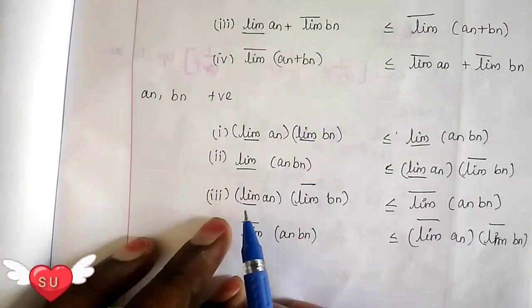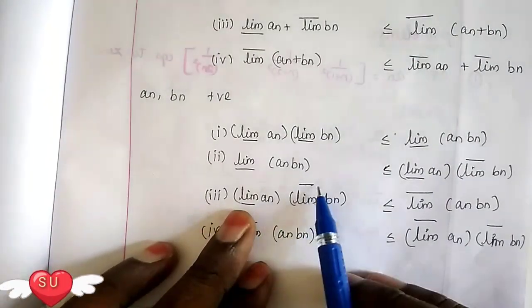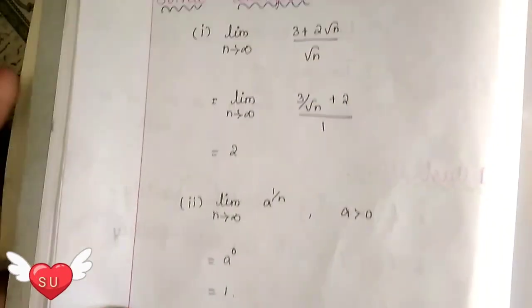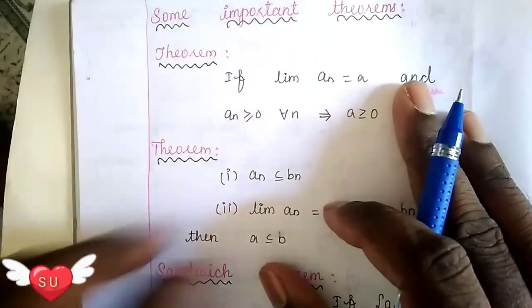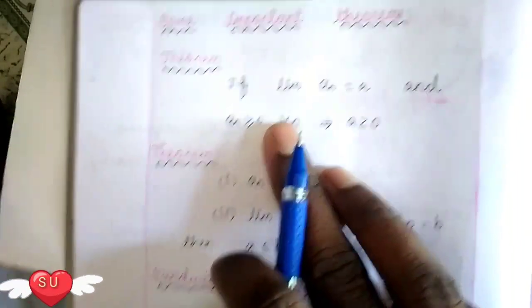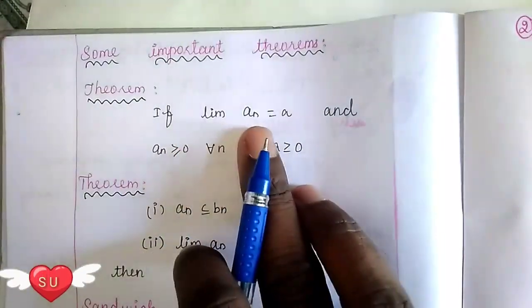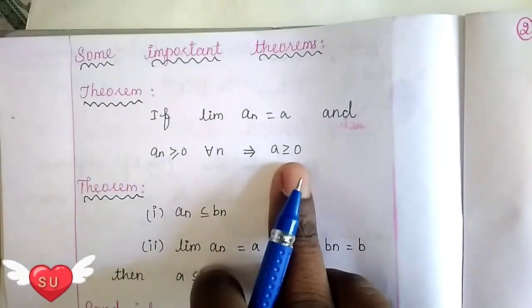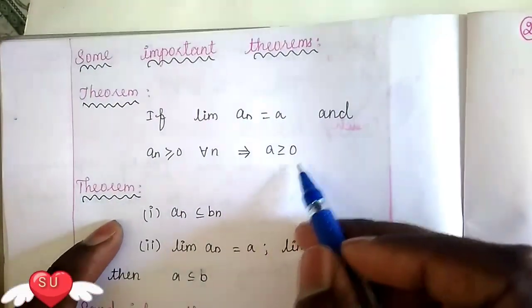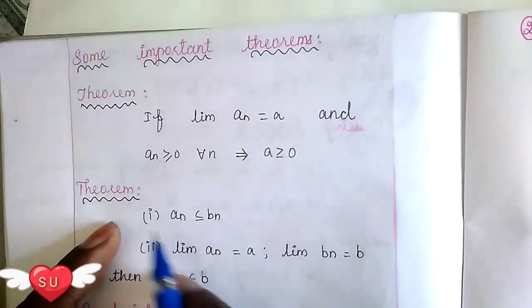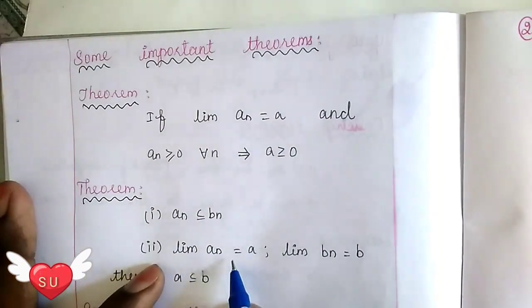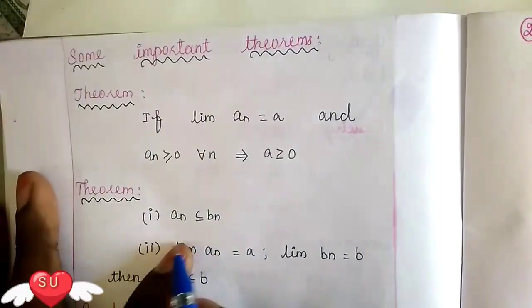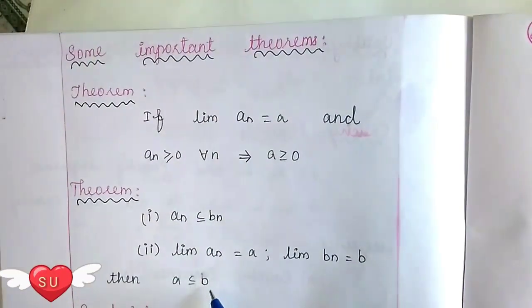That is what we call the limit of an — lower and upper bounds. Next, some important theorems. First: if the limit of an equals a and an is less than or equal to 0 for every n, then a is less than or equal to 0. Second: if an ≤ bn, limit of an equals a, and limit of bn equals b, then a ≤ b.